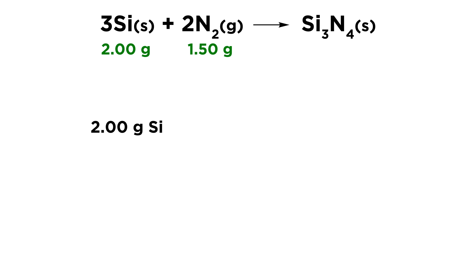So let's take our 2.00 grams of silicon, and we're going to multiply by 1 mole over 28.09 grams. That is the molar mass of silicon. So grams are going to cancel, and we're going to get 0.0712 moles of silicon. So now we have the number of moles of silicon.